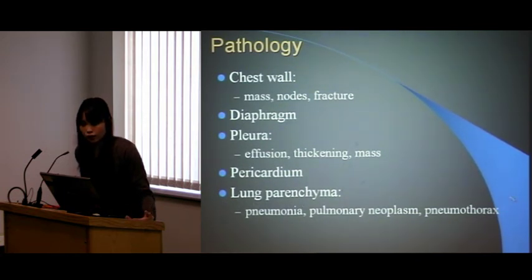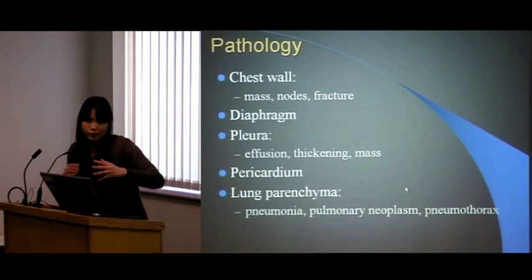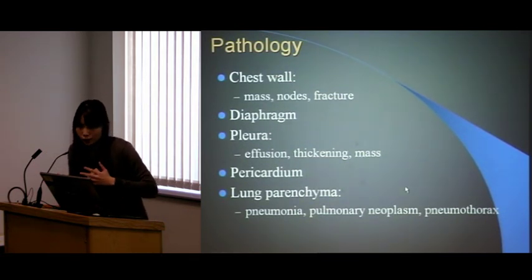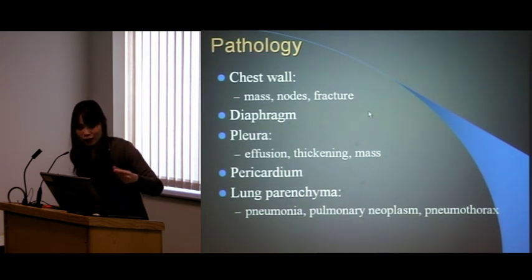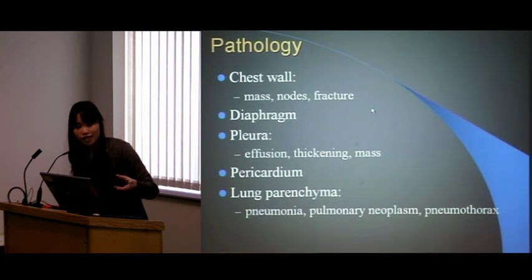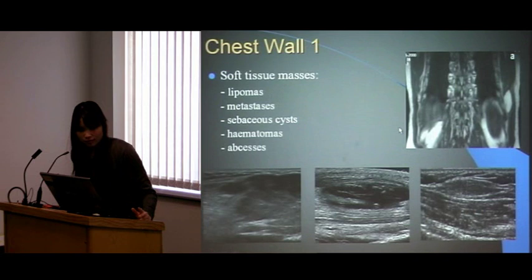Just one important point about looking at the lung parenchyma: the pathology has to be abutting against the pleura. There cannot be any air between the pathology and your probe — if there's any air, you can't see it. Anything more central you can't actually see.